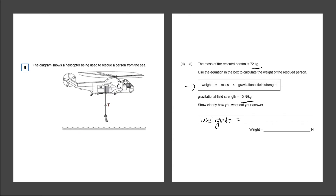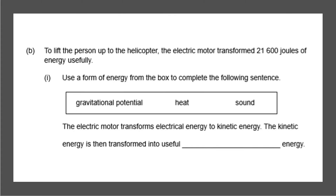To find the weight, we take the mass of 72 kilograms — which is already in the correct units — and multiply by the gravitational field strength of 10 newtons per kg. So 72 multiplied by 10 gives us 720 newtons. That will give us two marks: one for working out and one for the correct answer.